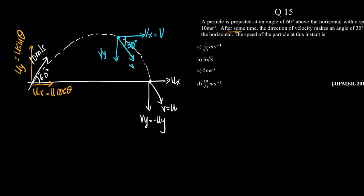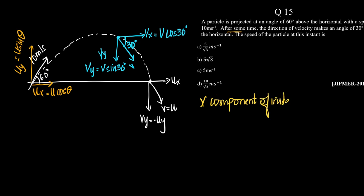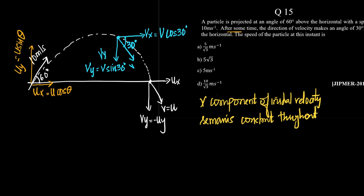Which means vx equals v cos theta. Now, what we need to understand is that the x-component of velocity — more precisely, the x-component of the initial velocity — remains constant throughout the motion. Which means ux here is the x-component and vx here is the x-component, so essentially ux should be equal to vx.